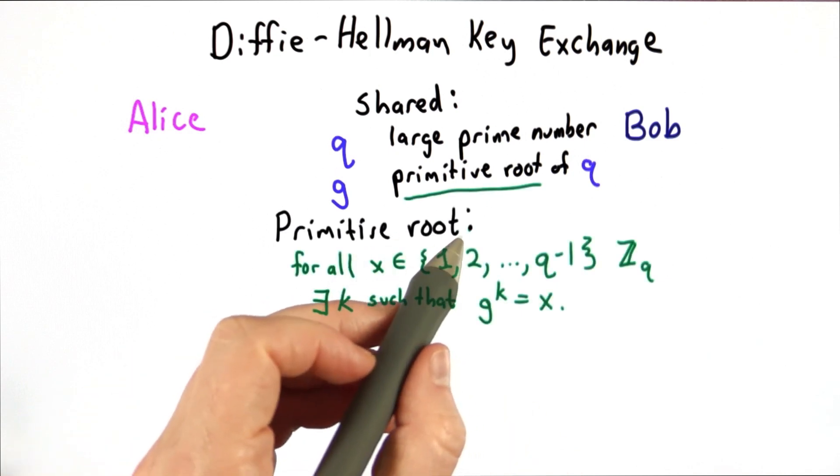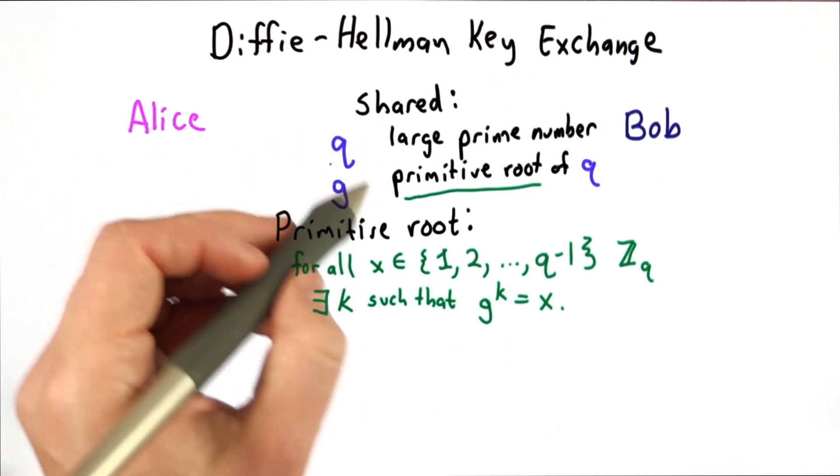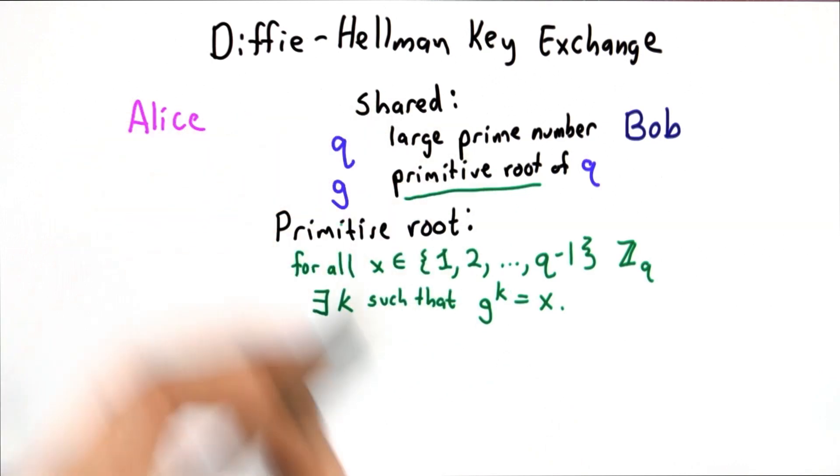What it means to be a primitive root is that for all numbers in the group zq, that is the numbers 1, 2 through q-1, we can generate all those numbers by raising g to some integer power. If q is prime, it must have a primitive root, and there are ways to find these primitive roots.